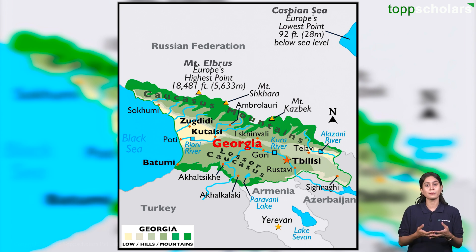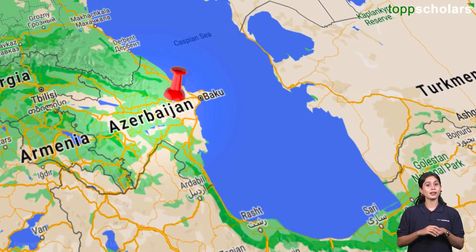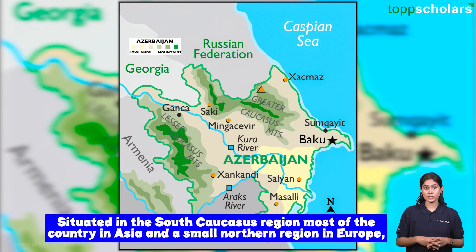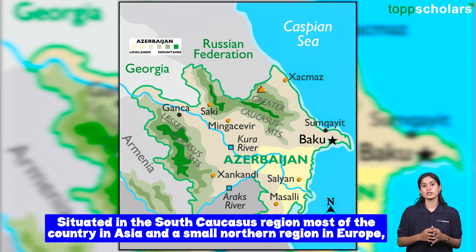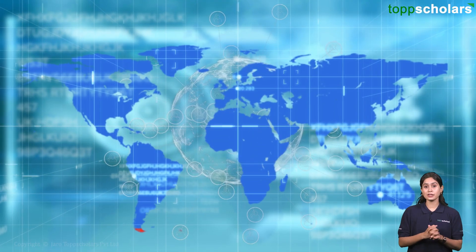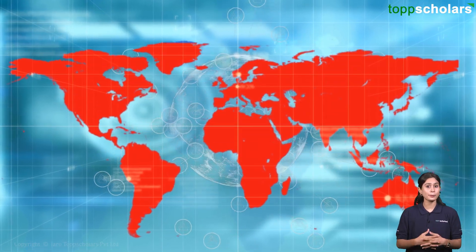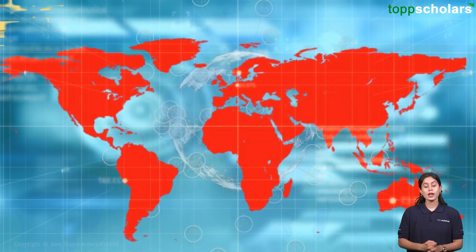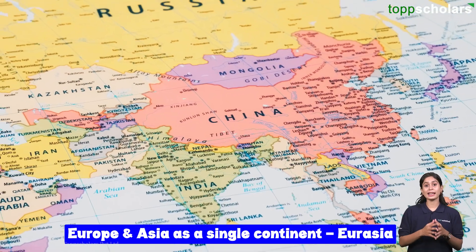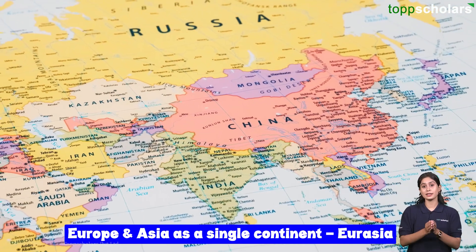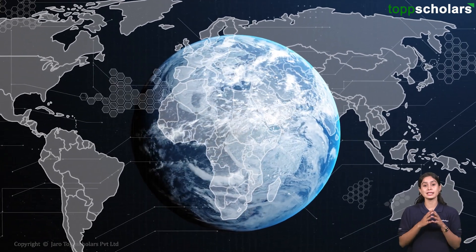The next country is Azerbaijan. Like Georgia, it is situated in the south Caucasus region, with most of the country in Asia and a small northern region in Europe, influenced by the Caucasus Mountains. Transcontinental countries' designation can vary based on continent border definitions. Some recognize Europe and Asia as a single continent, that is Eurasia, thereby excluding these countries from transcontinental classification.